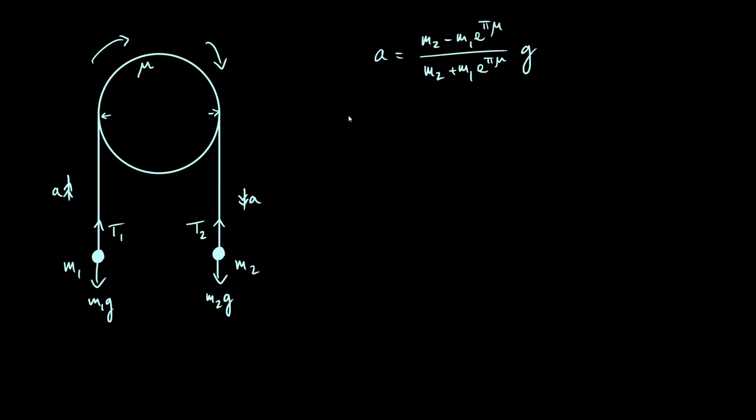So the way we can do that is just by looking at this expression and see when this goes to zero. So we can say that basically to accelerate in such a way that particle 1 goes up and particle 2 goes down, what you need is for m2 to be bigger than m1 e to the pi mu.